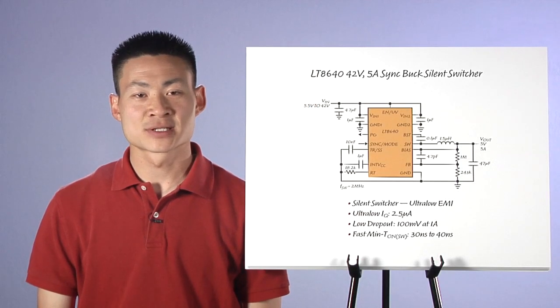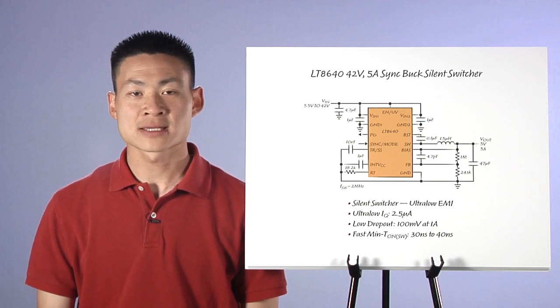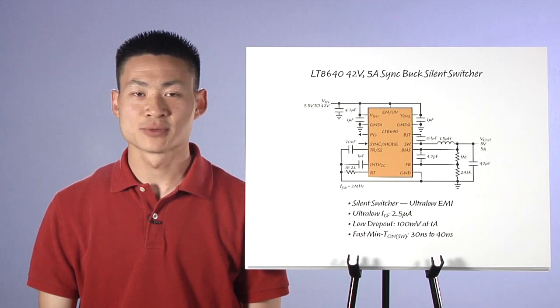The LT8640 comes in a small 3 millimeter by 4 millimeter QFN package and requires only resistors, capacitors, and one inductor to complete the full circuit.